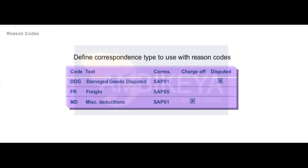If you are using different types of correspondence depending on the reason code, select the According to Reason Code checkbox. On the Reason Code screen, you then define the correspondence type for each reason code.